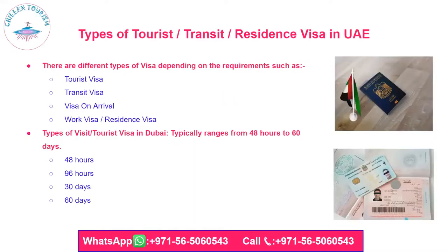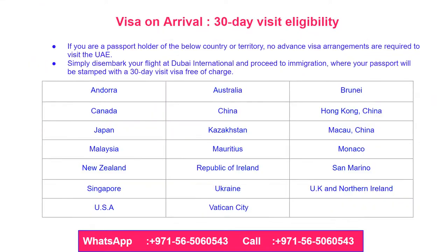Types of tourist, transit, and residence visas in UAE. There are different types of visa depending on requirements, such as tourist visa, transit visa, visa on arrival, work visa and residence visa. Types of tourist visa in Dubai typically range from 48 hours to 60 days. For visa on arrival — 30 days visit eligibility — if you are a passport holder of the eligible countries, no advance visa arrangements are required to visit the UAE.